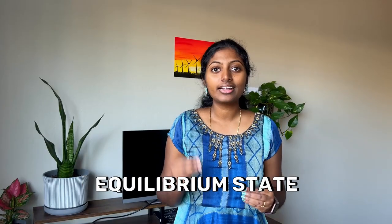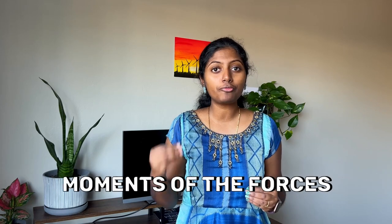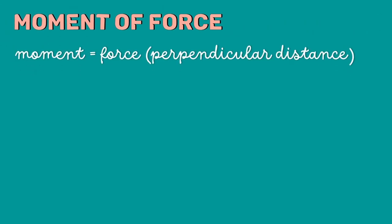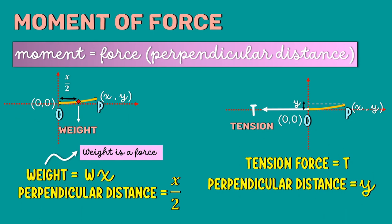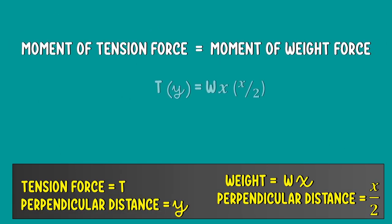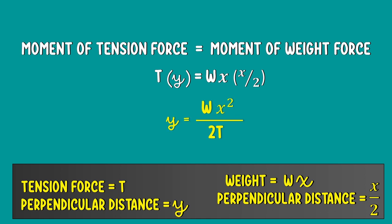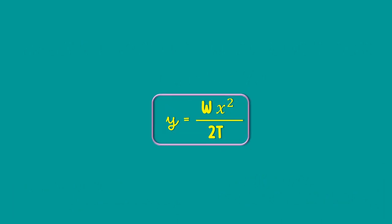Here, the conductor is in an equilibrium state. Therefore, the moments of the force about the point O will be equal. We know that the moment is force multiplied by perpendicular distance. Equating the moments, we get TY equals WX multiplied by X by 2. This means Y equals WX squared divided by 2T.